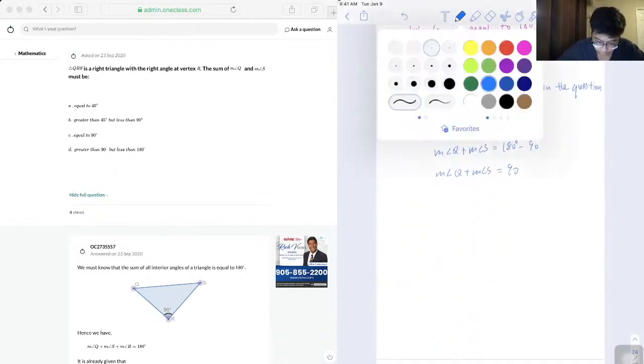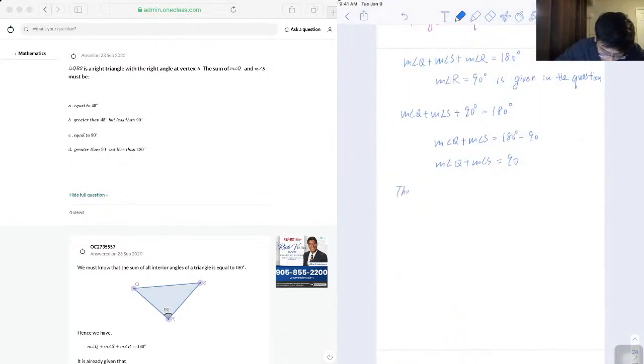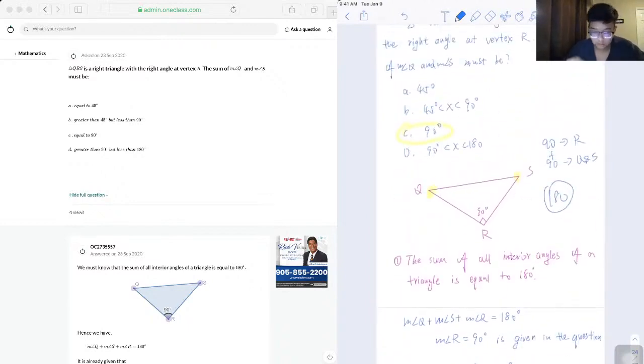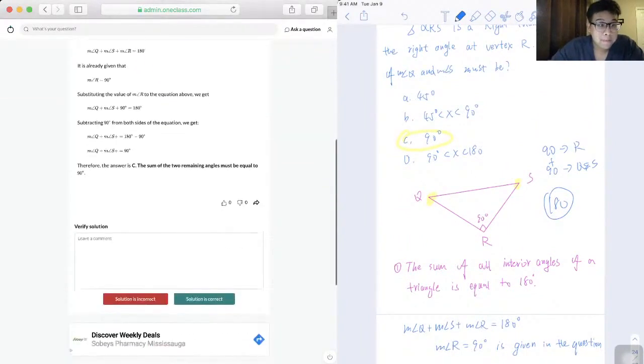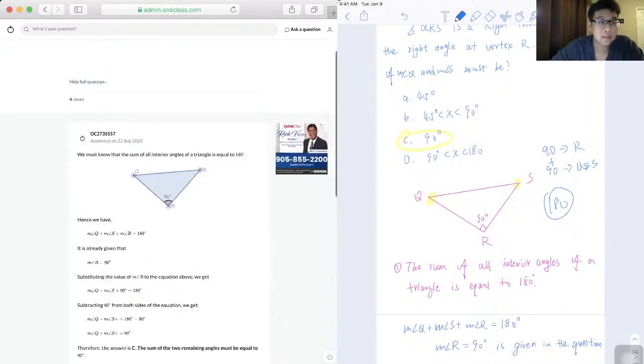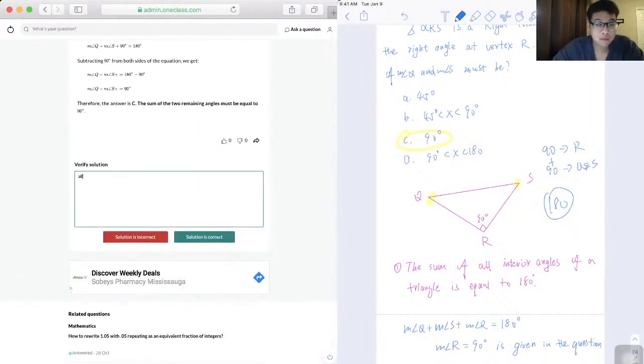Therefore, the sum of the two remaining angles must be equal to 90 degrees, so our answer will be C. C equals 90, correct.